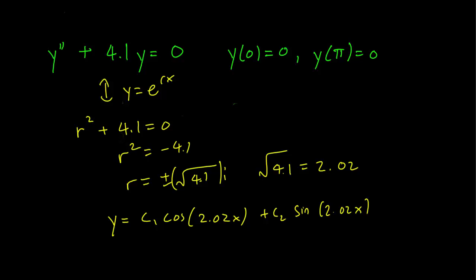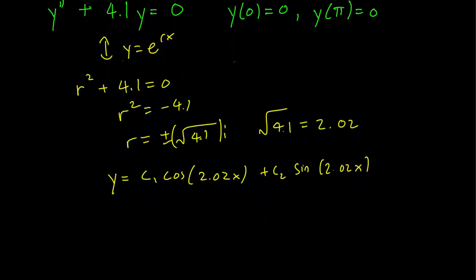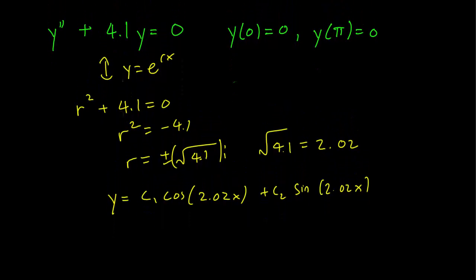So still a very similar general solution than last time. But let's see what happens when we plug in initial conditions. y(0) = 0 gives us 0 equals c₁ again. So we have that first equation still the same. But let's see what happens to the second equation.